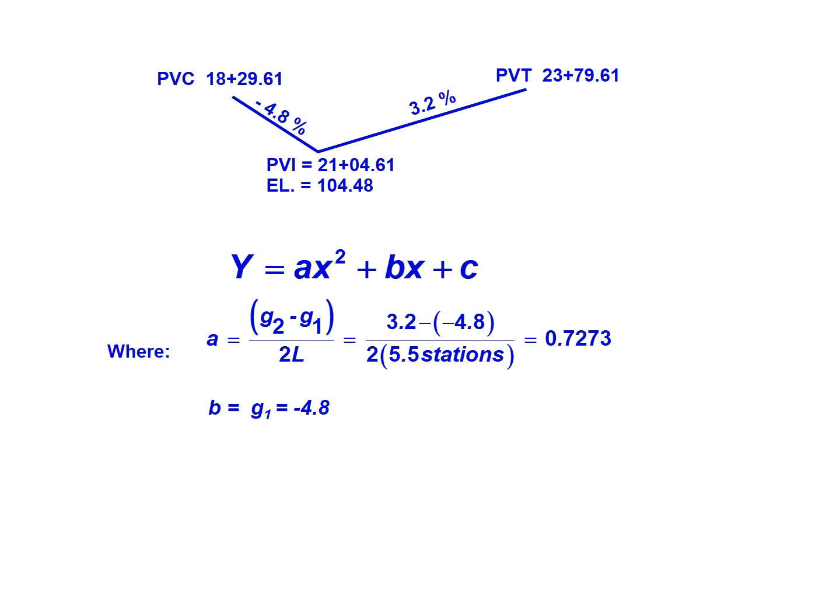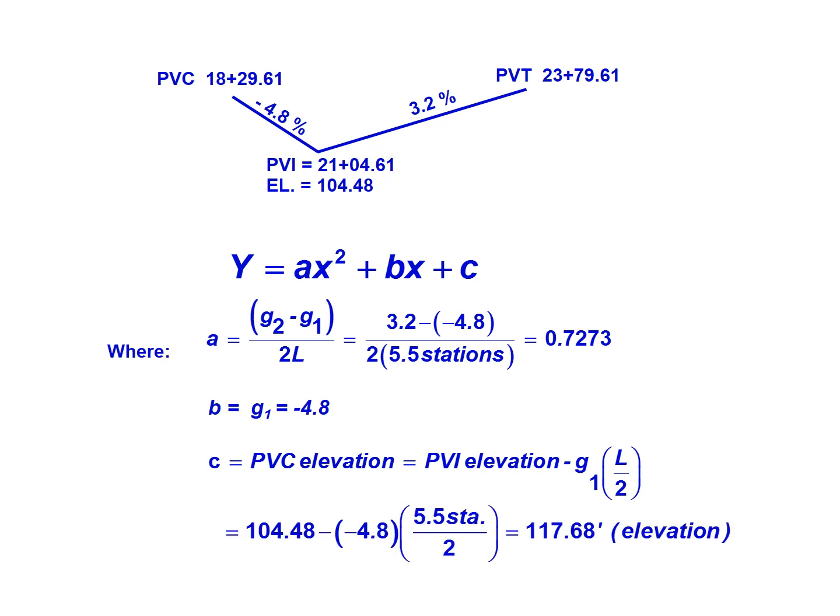B is just g1, which is negative 4.8 — it's very important to keep that negative sign. C is our PVC elevation. We're not given the PVC elevation directly, but we are given the PVI elevation. We find the PVC elevation by taking the PVI elevation and subtracting g1 multiplied by half the length: 104.48 minus (negative 4.8 times 5.5 divided by 2), giving a PVC elevation of 117.68 feet. This makes sense since the PVC elevation is higher than the PVI elevation.